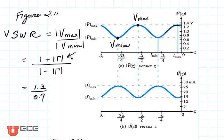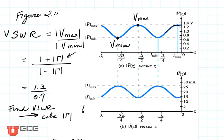As soon as we find the VSWR, we can use that to calculate the reflection coefficient. This is a very important capability. We can't measure the reflection coefficient directly in most cases, but we can measure the VSWR and use that to calculate the reflection coefficient.